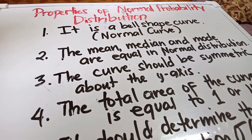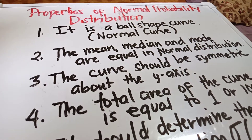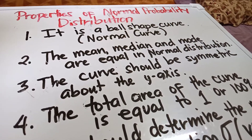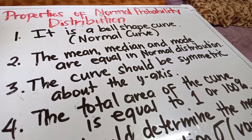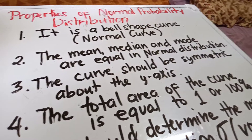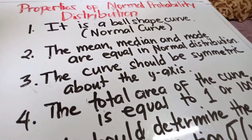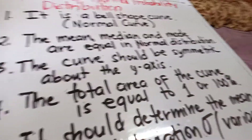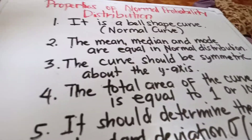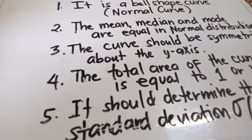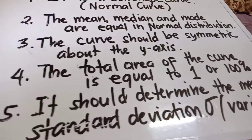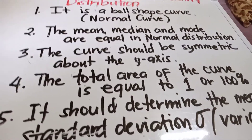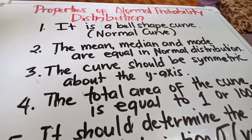Third, the curve should be symmetric about the y-axis. Fourth, the total area of the curve is equal to one, or 100 percent. Fifth, the distribution is determined by the mean, the standard deviation, and the variance. These are the properties of the normal distribution.